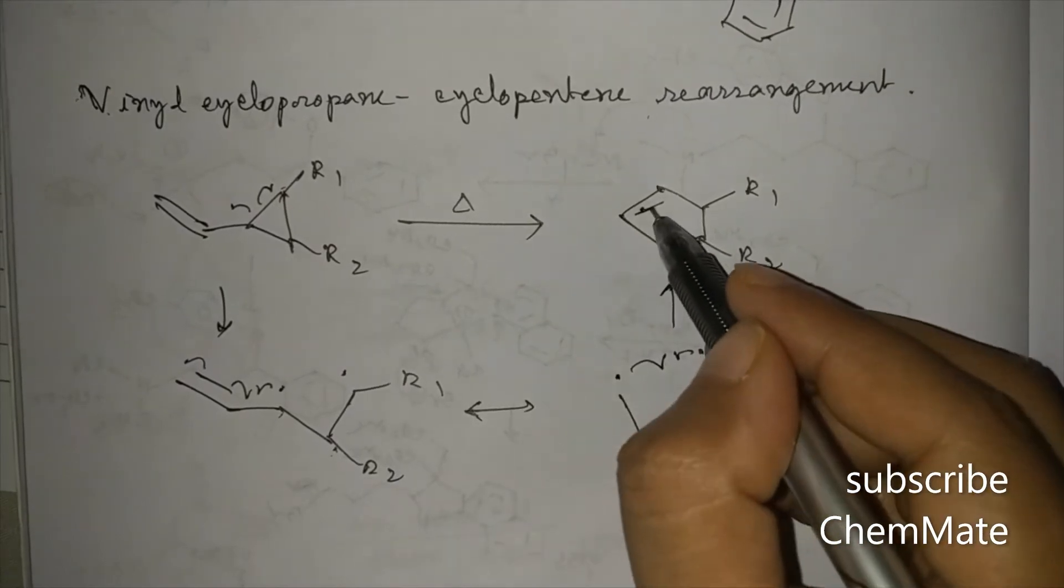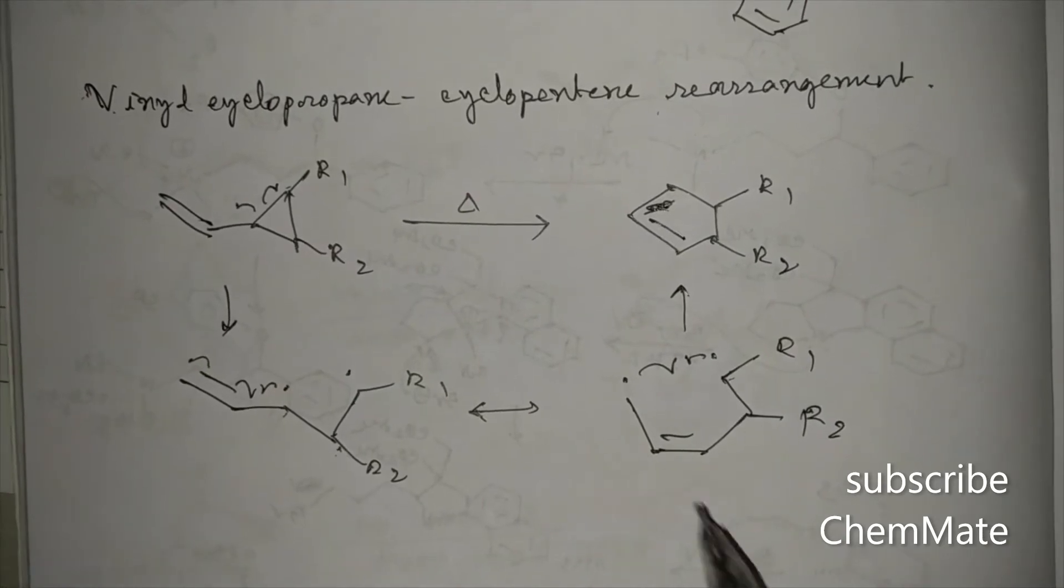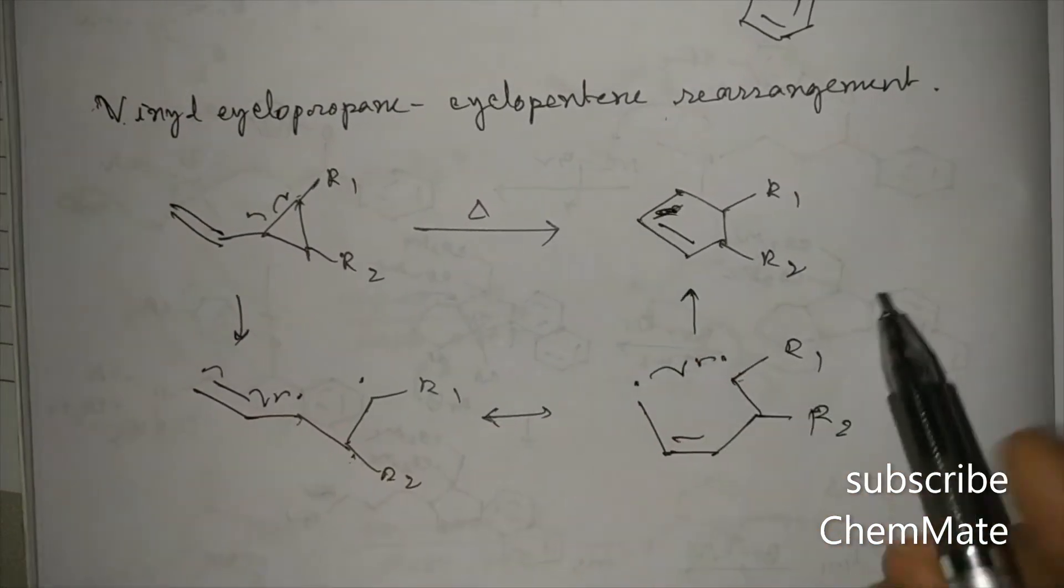This will recombine to form this. The double bond will be actually in this side. So this is the vinyl cyclopropane-cyclopentene rearrangement.